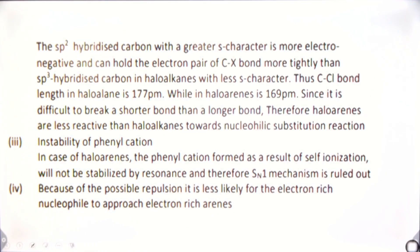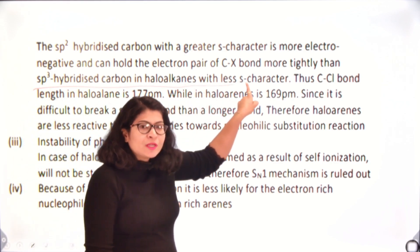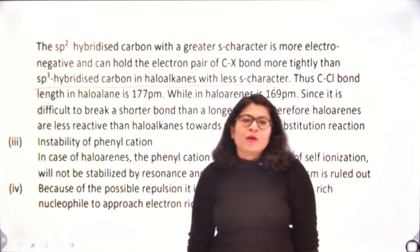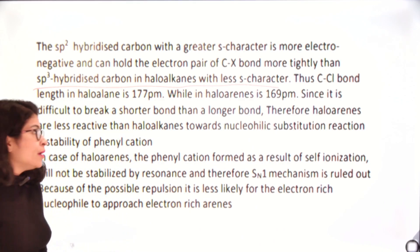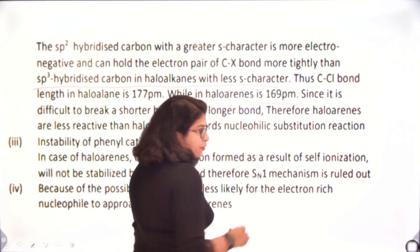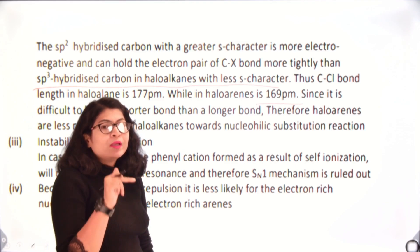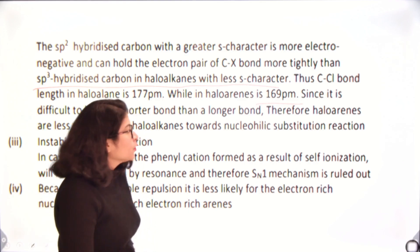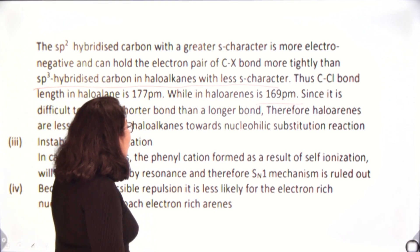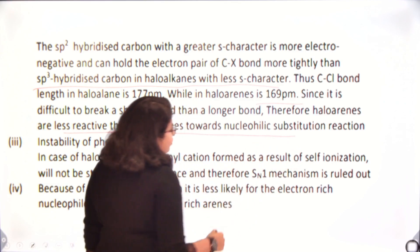The sp2 hybridized carbon has greater s-character and is more electronegative, holding the electron pair more tightly than sp3 hybridized carbon in haloalkanes. Thus, the C–Cl bond length in haloalkanes is 177 pm while in haloarenes it is 169 pm — a shorter bond. Because the chlorine atom is more strongly drawn towards the carbon in the ring, the bond becomes stronger and breaking it becomes difficult. Since it is harder to break a shorter bond, haloarenes are less reactive than haloalkanes towards nucleophilic substitution.